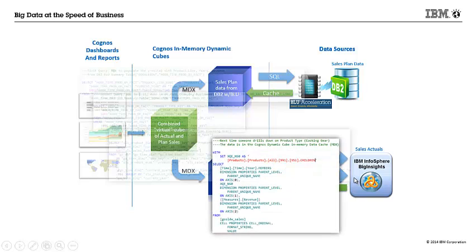However, as shown in this fourth query, subsequent users will experience better performance as the Cognos Dynamic Cube has built an in-memory OLAP cube with the previous queries. So rather than being SQL, this query is an MDX because this data is now retrieved from the Dynamic Cube itself.